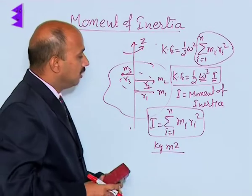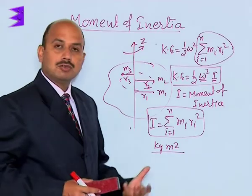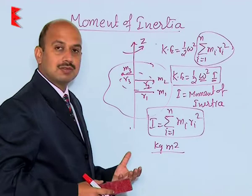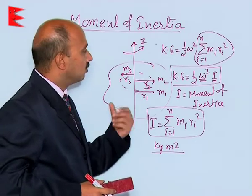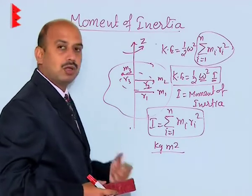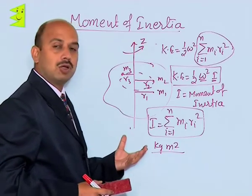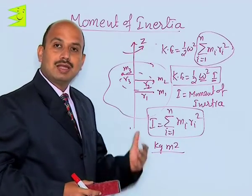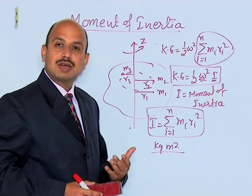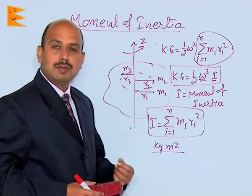The moment of inertia of a body depends on the distribution of mass about the axis of rotation, the shape and size of the body, the mass of the body, and the orientation of the axis of rotation. These are the factors on which moment of inertia of a body depends.